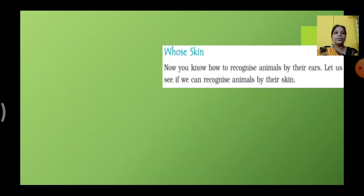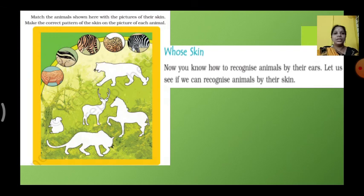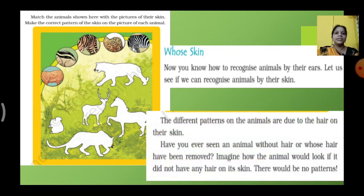Next, whose skin. Now you know how to recognize animals by their ears. Let us see if we can recognize animals by their skin. Look at the picture. They have shown some skins and they have given some animals. Shade, so match them. Which animal have which type of skin, you have to match this.